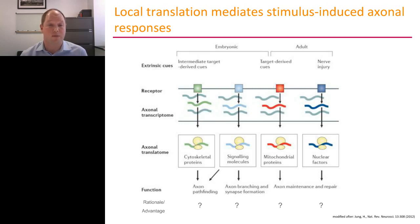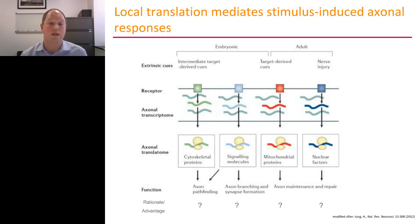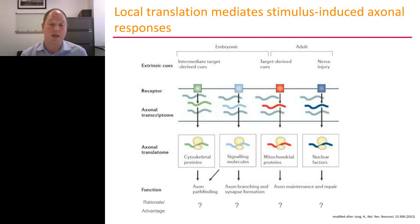This allows us to summarize what we have learned over the last 15 years or so. Most of the work has been done in embryonic axons during development, where we now have a very good understanding that guidance cues lead to local translation of cytoskeletal proteins, but also signaling molecules such as CREP1, that together lead to axon pathfinding, axon branching in the case of beta-actin, and possibly synapse formation.